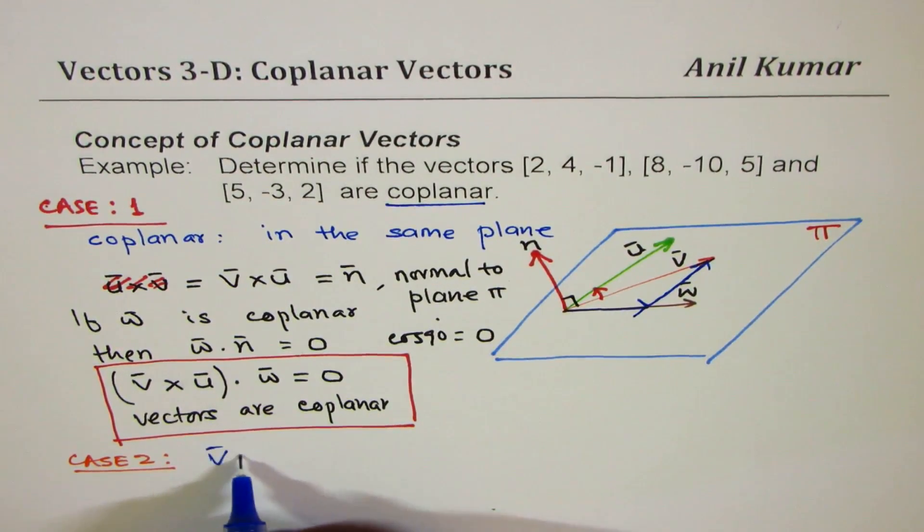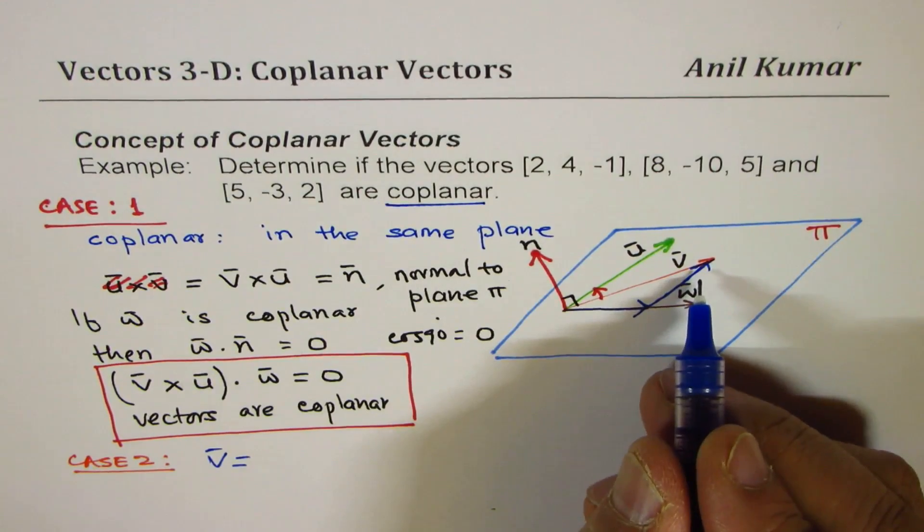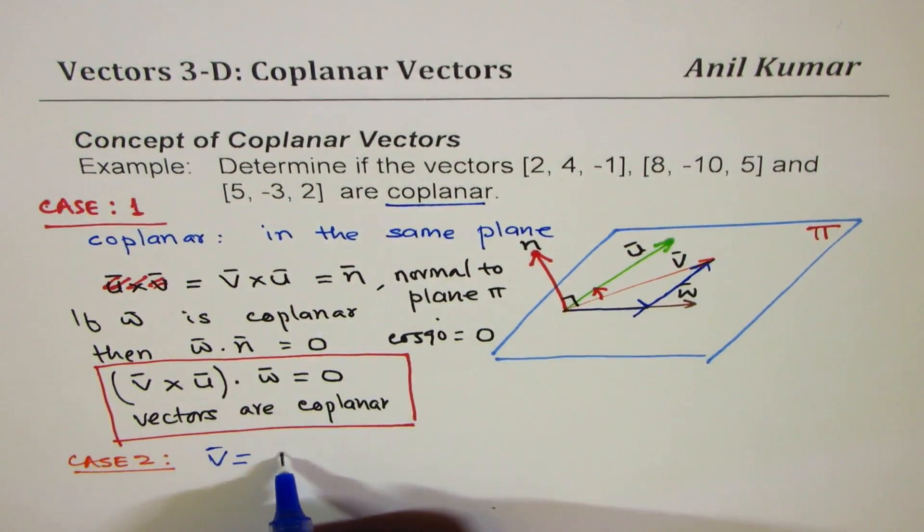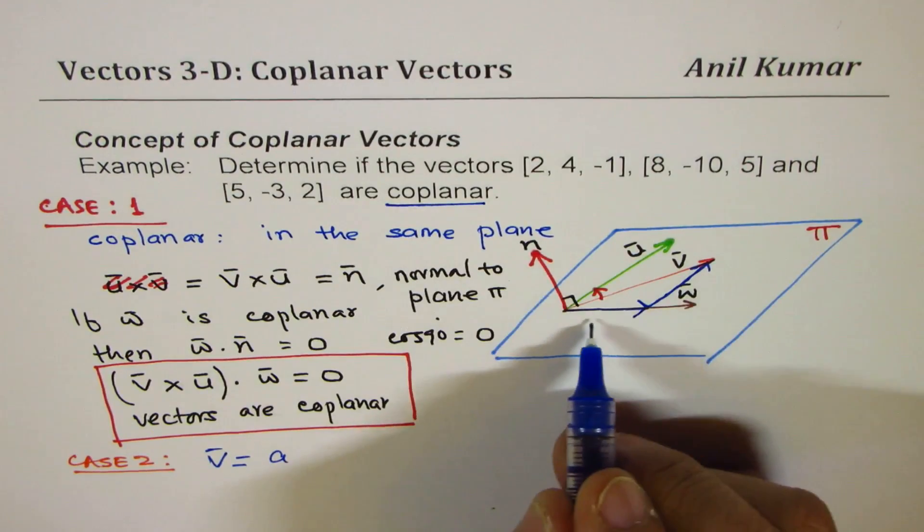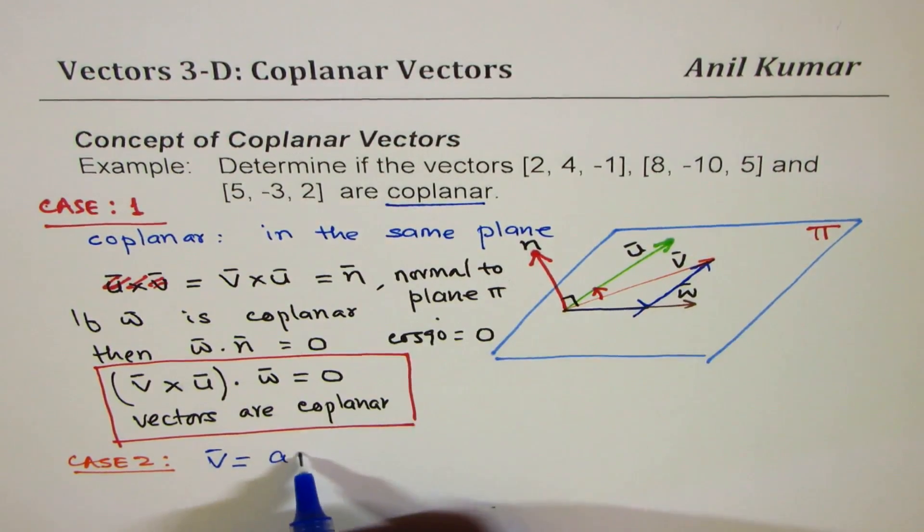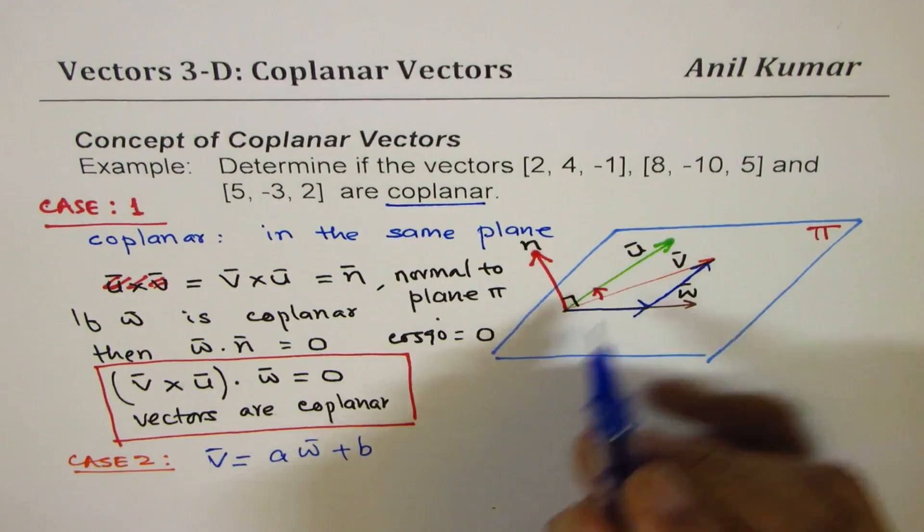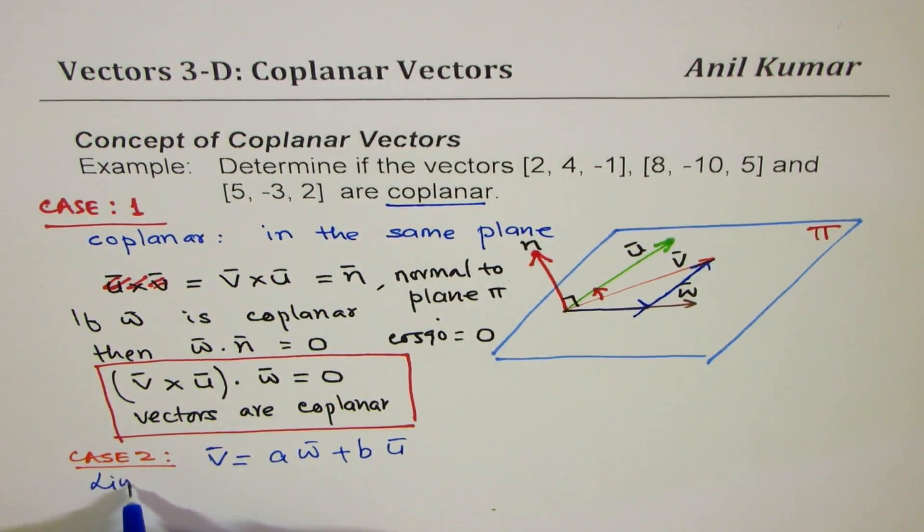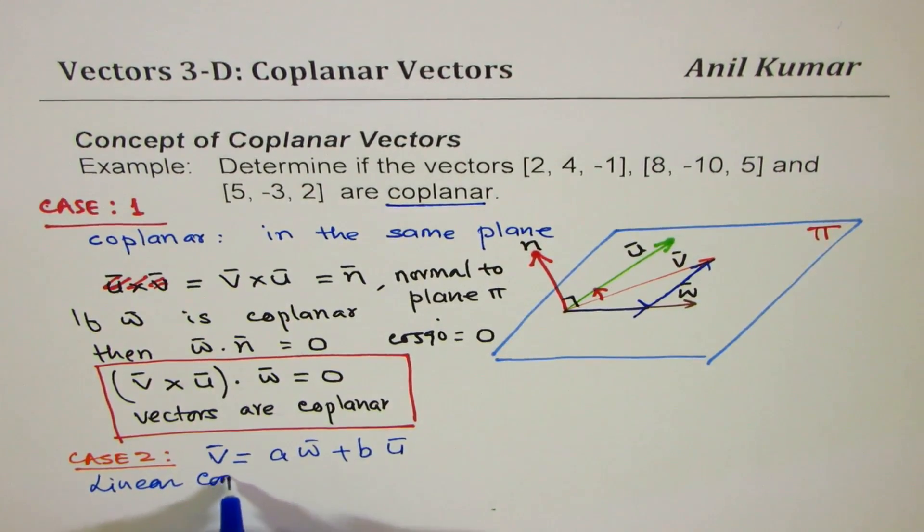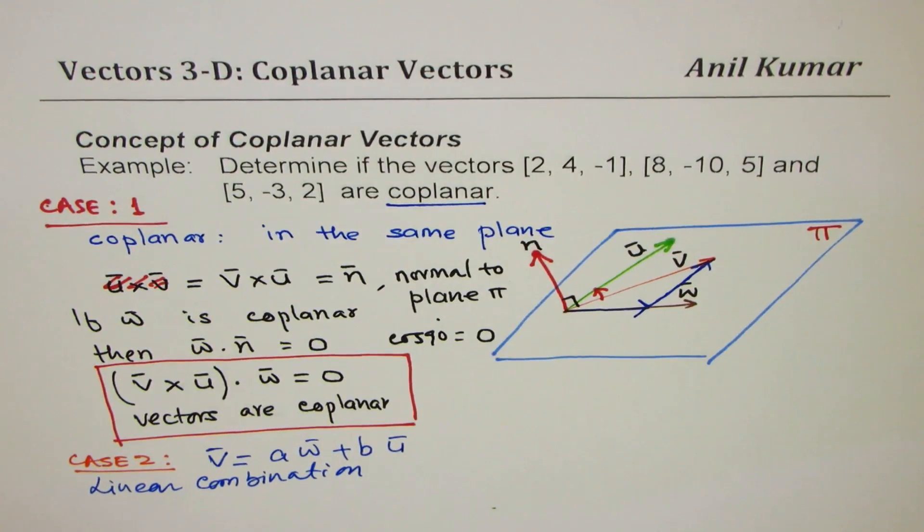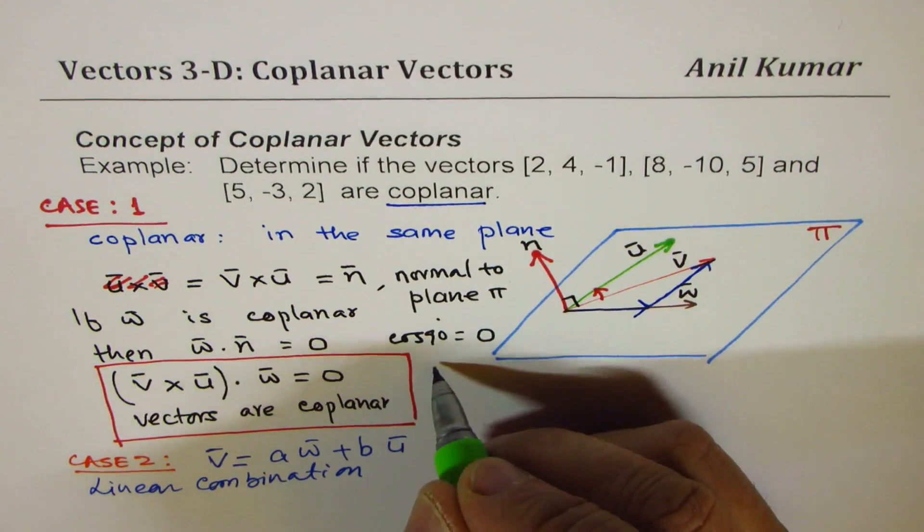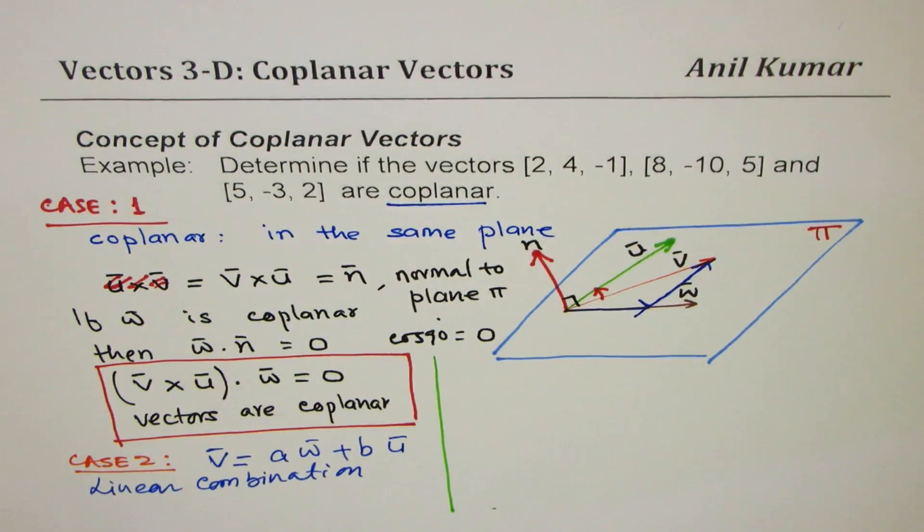If I choose to represent v as a combination of these two, one way could be like this. If I draw a vector parallel to this, scalar multiple of w and scalar multiple of u could be equal to v. That is to say, a times scalar multiple of w, plus b times scalar multiple of u. That is the linear combination.